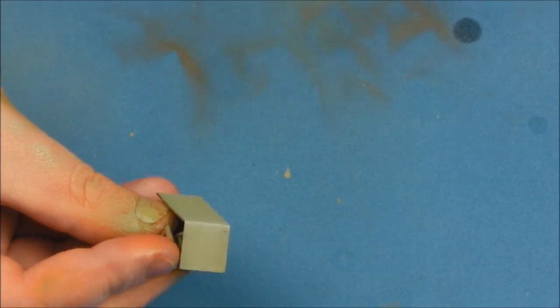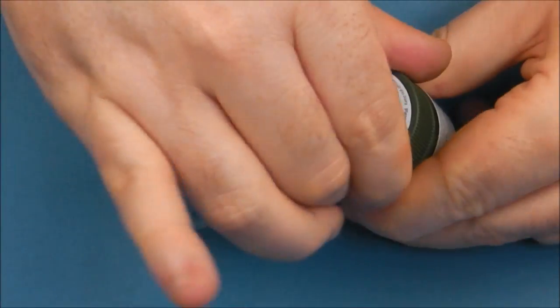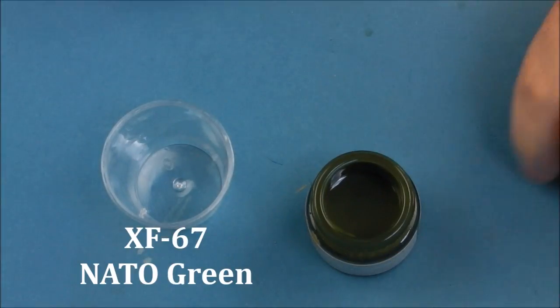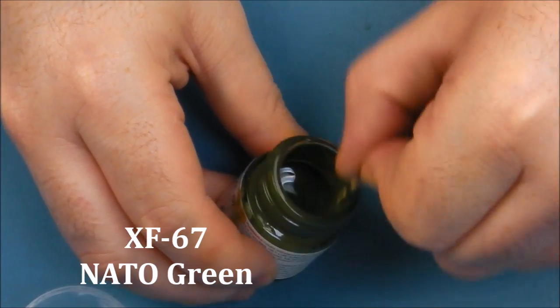Now it's on to the tricky part. We're going to start working on the camouflage pattern, and for the green we're going to use XF67 NATO green. Again, there's different colors you can use, I just prefer using NATO green.